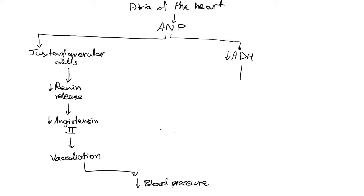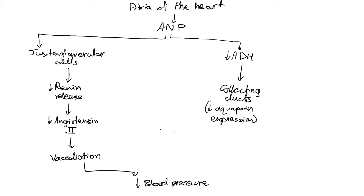Decreased ADH has an effect on the collecting ducts — specifically decreased aquaporin expression. This decreased aquaporin expression means there is decreased sodium ion and water reabsorption, which decreases blood volume and therefore allows for a decrease in blood pressure.